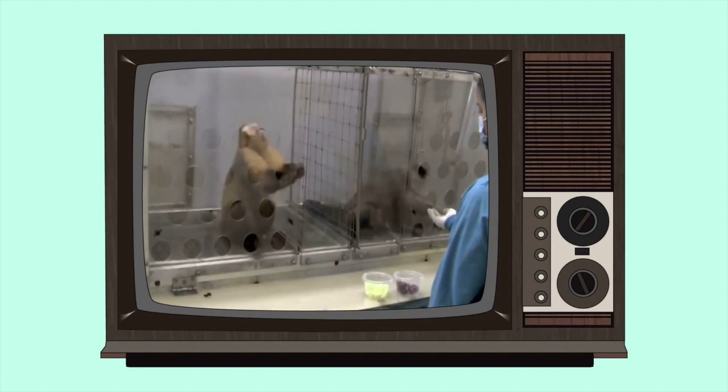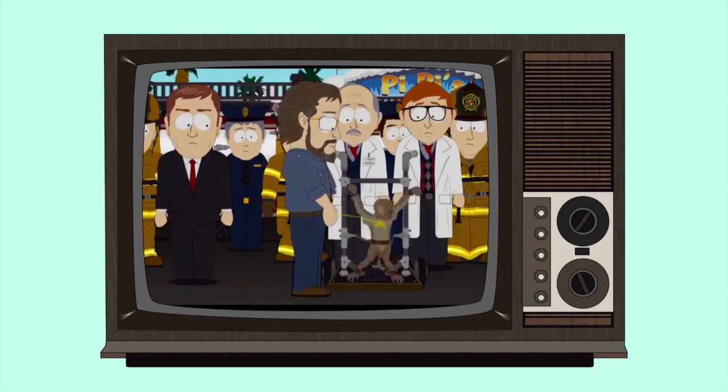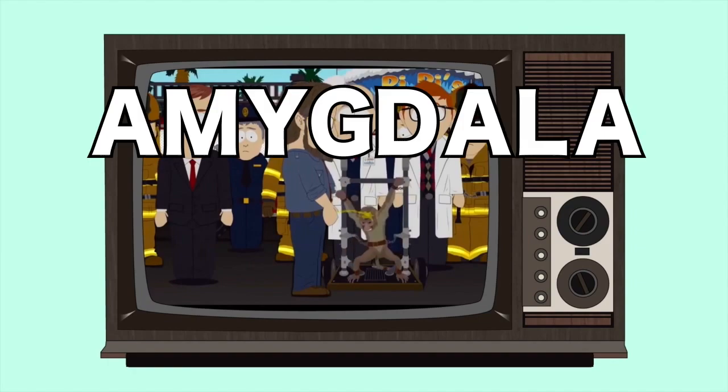So I think that answers our question. Not being treated fairly activated Steve's amygdala, causing him to become aggressive. If getting a cucumber instead of a grape sets this off, you can imagine he wouldn't be best pleased if someone peed on him. If you urinate on a monkey, it becomes aggressive because of the amygdala.